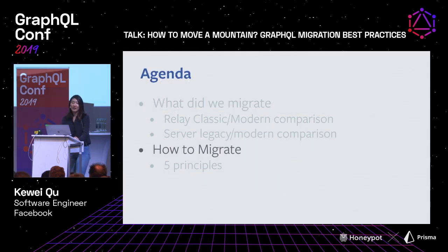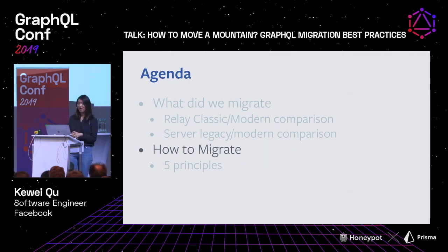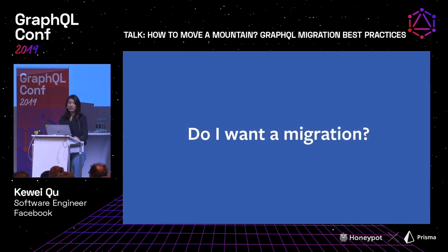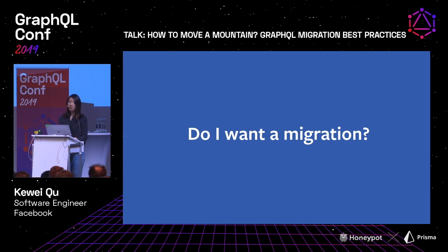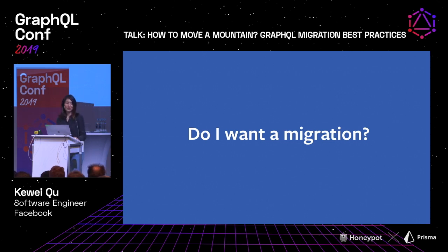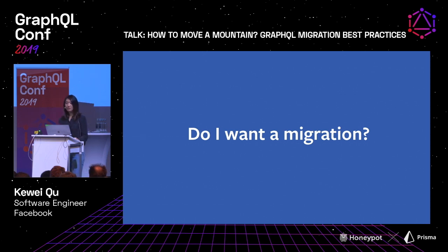Now that we've summarized how Relay Modern and GraphQL server make things better, let's move on to actually tackle the migration. The first principle is to always ask: do I want a migration? To be honest, migration is a complicated and risky task. It requires a lot of human effort and a lot of time. A migration may never complete, and then you'll be stuck supporting two systems forever, which might be a situation even worse than what you began with. Therefore, it is very important to weigh the benefits and cost of a migration.